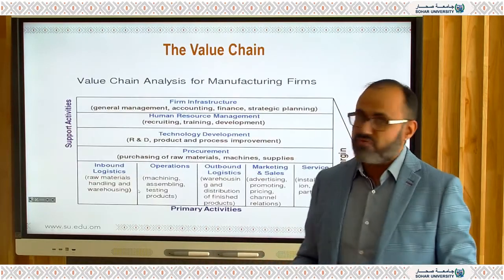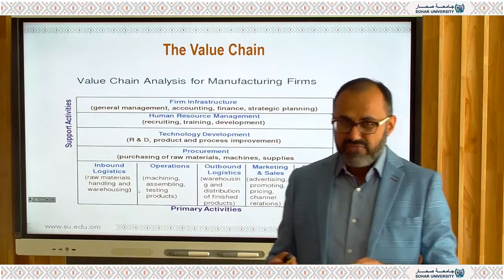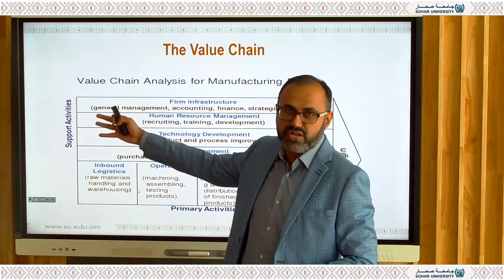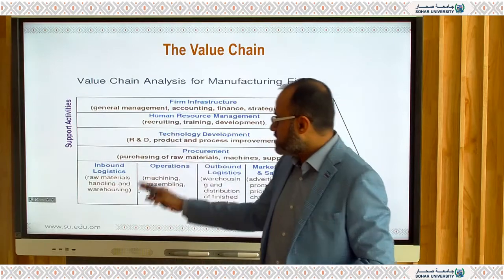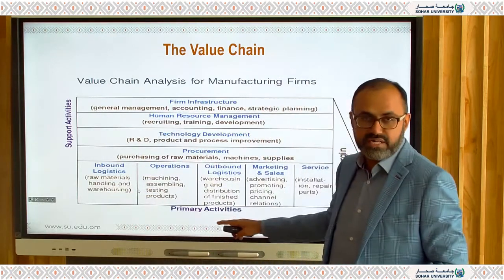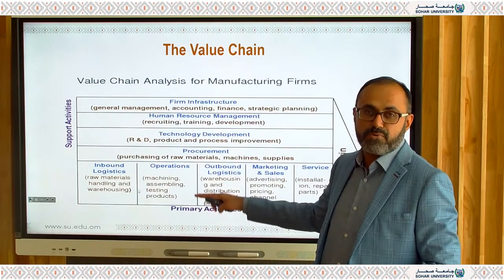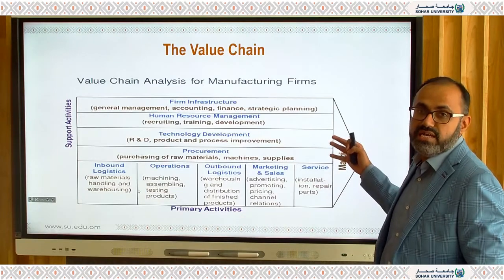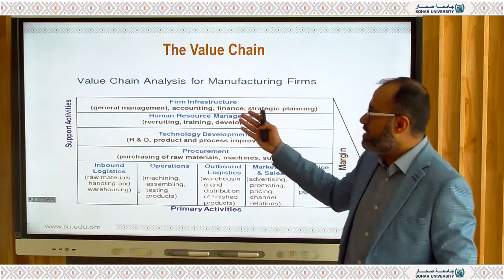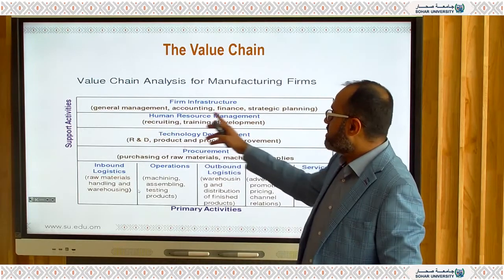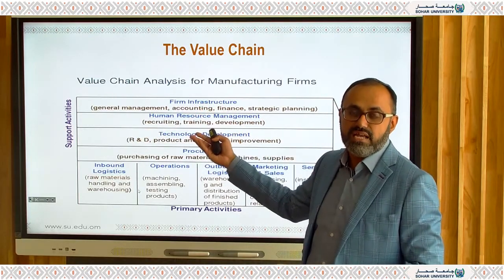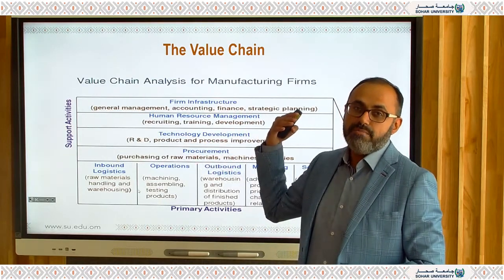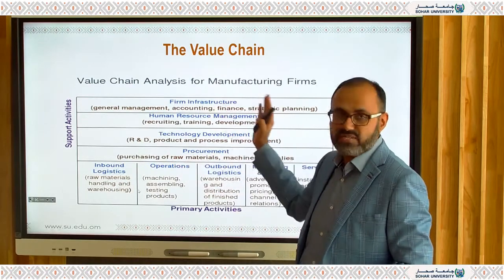There are three main features of the value chain — supporting activities and primary activities. Supporting activities include firm infrastructure: how good is the building, how organized they are, how many air conditioners are properly working, how many computers are efficient. These are firm infrastructure support activities.